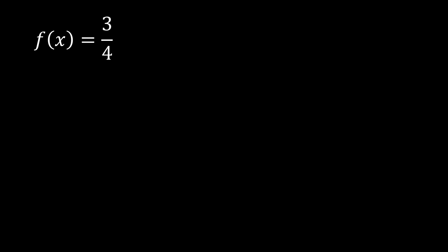The first one is f of x equal to 3 or 4. This one is a derivative of a constant. So our derivative for this is f prime of x — this is our symbol. You may use a different symbol for that, and it would simply mean the same thing as long as it denotes the derivative. The derivative of a constant will always be equal to 0.